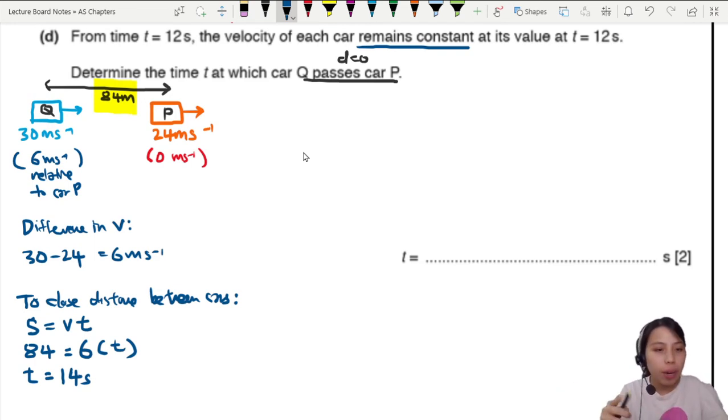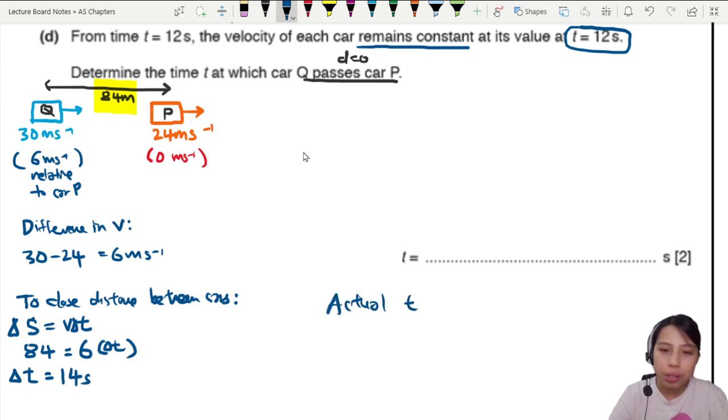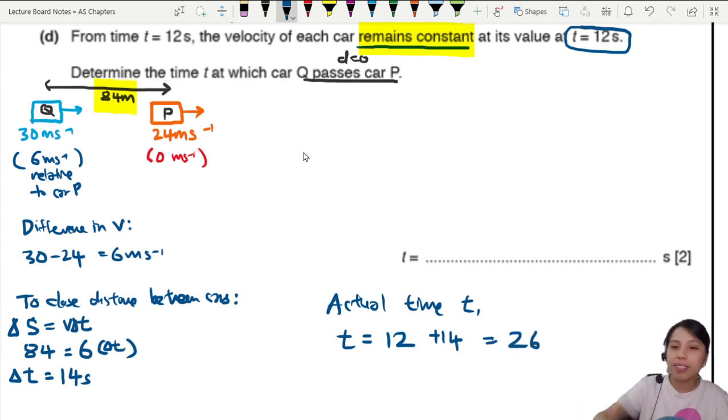So the answer is 14. Wait, wait, wait, wait, wait, wait, wait. This one is to close a distance between them. So it's like a delta T. And remember, we are looking at the overall picture, right? So from 12 seconds onward plus another 24. Okay, okay. So we need to say the total, the actual time. Actual time T is going to be, at first we already 12 seconds. Then only they have the car remain, car velocity remain constant. So that is 14 seconds later, only they pass each other just nicely and this will be 26 seconds in total. So this one is the correct answer, 26.